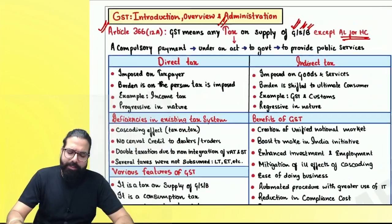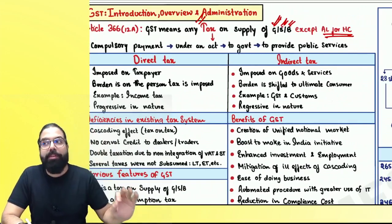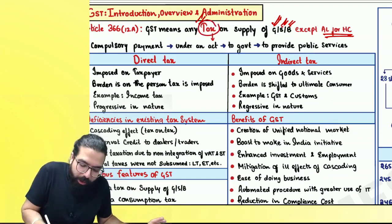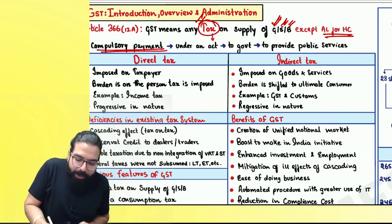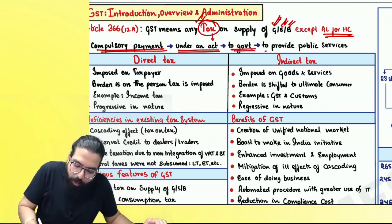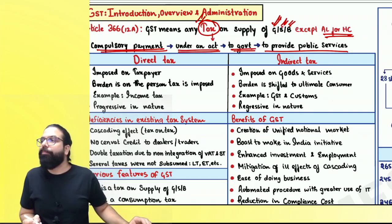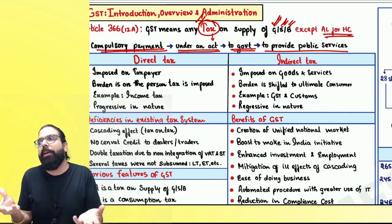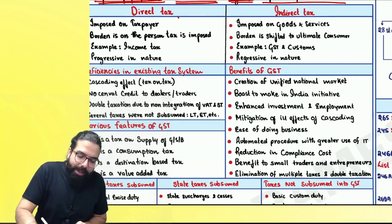So GST means any tax on supply — there has to be a supply of goods, services or both, except alcoholic liquor for human consumption. Next, what do you mean by tax? Tax is a compulsory payment made under an act to the government, to provide you various public services such as roads, infrastructure, healthcare, and education.